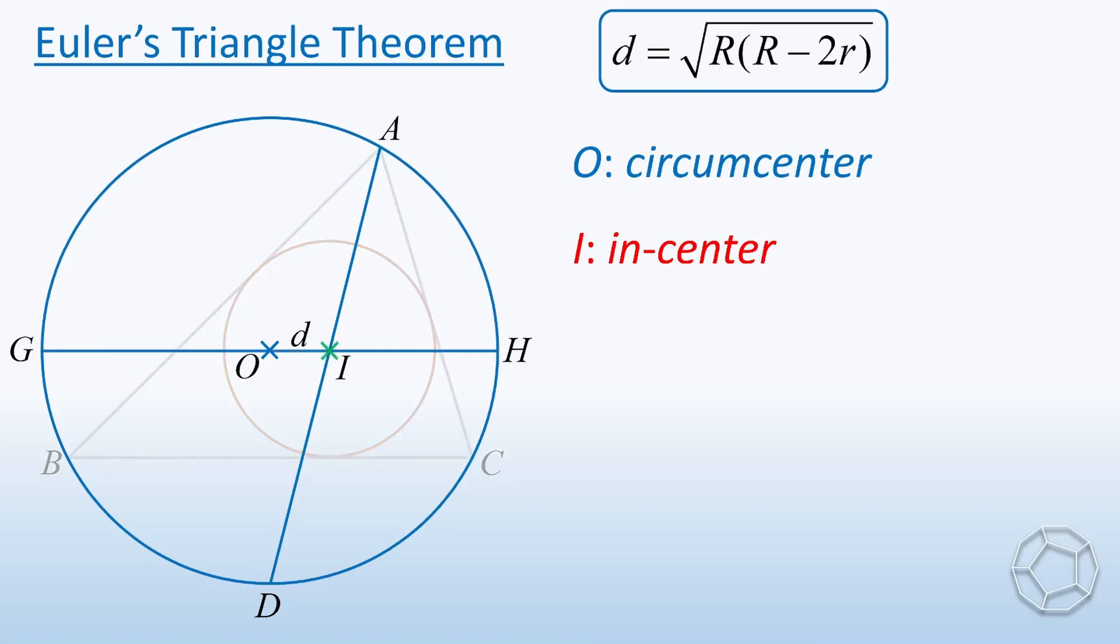Let's hide the triangle and the incircle for a moment. Because O is the center of the blue circle, so OG and OH are both equal to the radius capital letter R. That means IG is equal to R plus d and IH is equal to R minus d.